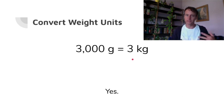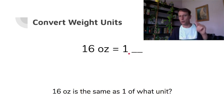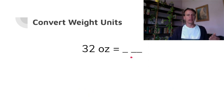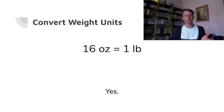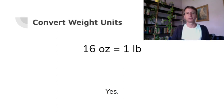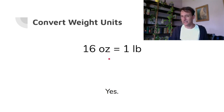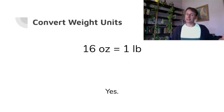Three thousand grams is three kilograms. In the customary system, 16 ounces is one pound. By the way, the abbreviation 'lb' comes from the Latin word 'libra,' which means weight — that's why the astrological sign Libra holds scales. The 'oz' for ounce comes from the Italian word 'onza,' which has a z in it, even though the English word ounce does not.